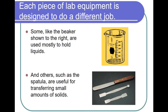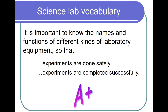Each piece of lab equipment is designed to do a different job. Some, like the beaker shown to the right, are used mostly to hold liquids, and others, such as the spatula, are useful for transferring small amounts of solids. It is important to know the names and functions of different kinds of laboratory equipment so that experiments are done safely and completed successfully.